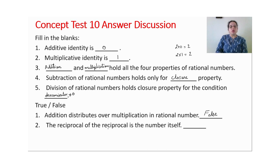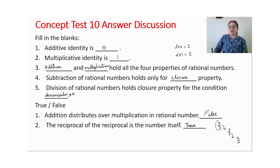The reciprocal of the reciprocal is the number itself — this is true. For example, take 2 by 3. The reciprocal is 3 by 2, and the reciprocal of 3 by 2 is 2 by 3 again. So the reciprocal of the reciprocal is the number itself; the statement is true.